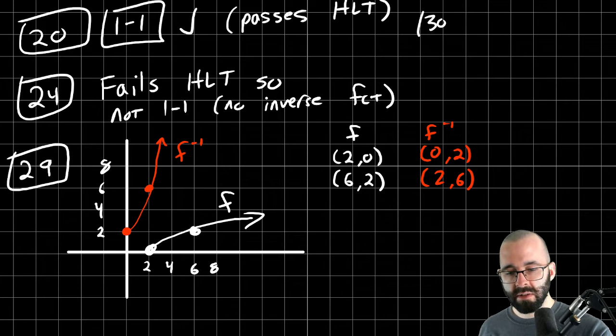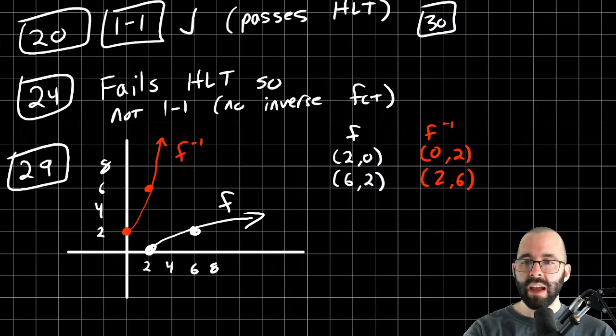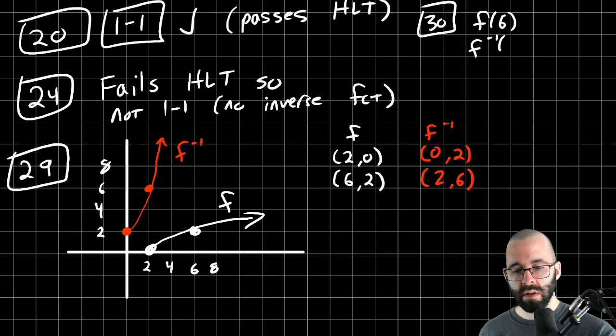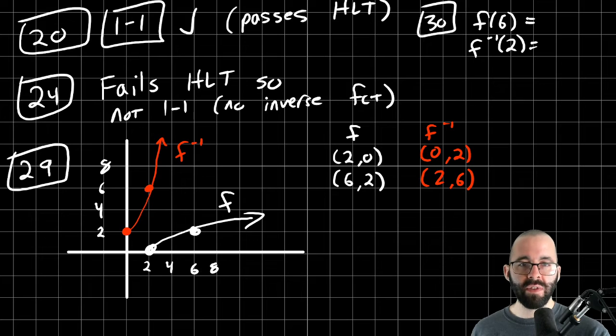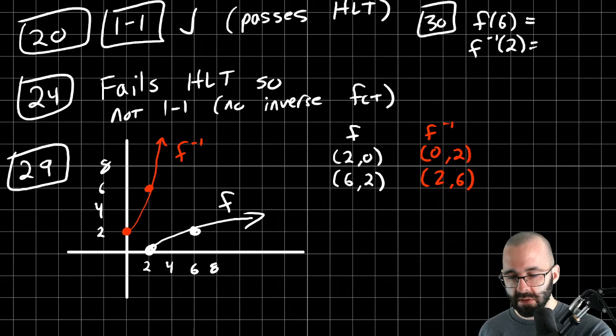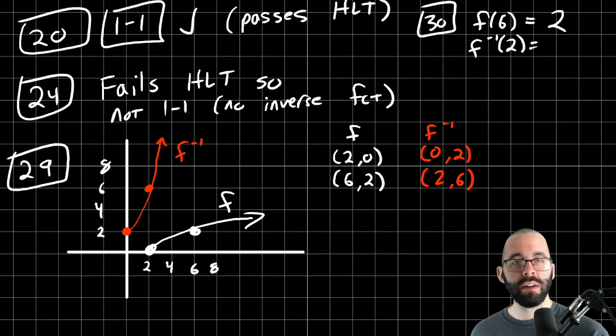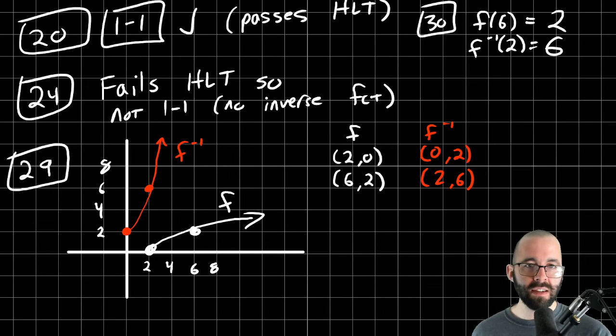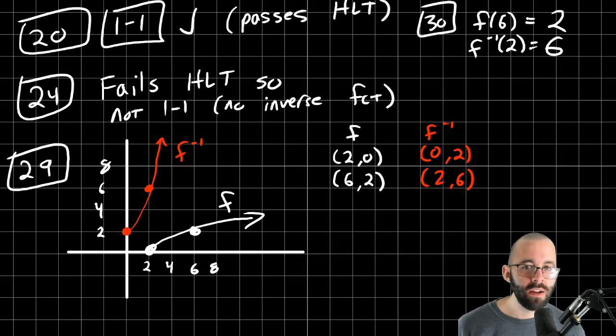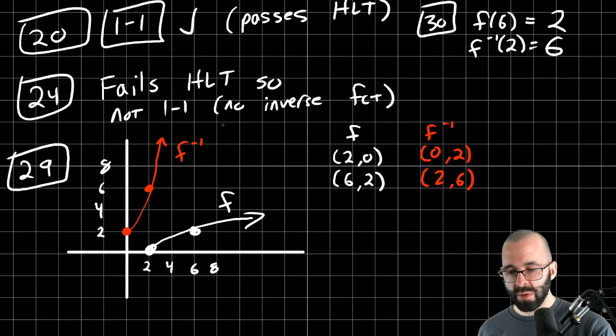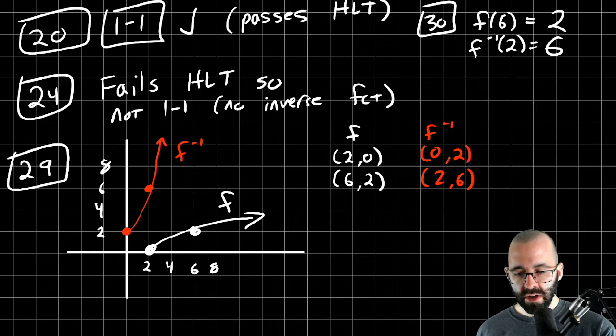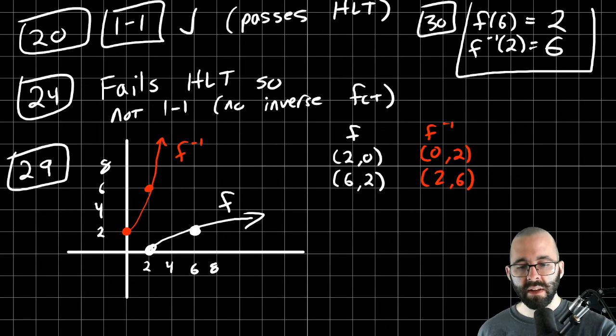Let's do number 30 while we're here. Very closely related. 30 says, find F of 6 and F inverse of 2. So F of 6 says, when the X value is 6, what is the Y value for F? When the X value is 6, the Y value is 2. So as soon as we write that down, we know the answer to this. F takes 6 to 2, so F inverse has to take 2 back to 6. Inverses undo the other functions. Another way of looking at this would be, we have the graph of F inverse. F inverse of 2 is equal to 6. Or you could look at the graph of F. When the Y value is 2, the X value is 6. A couple of different ways of doing that. Three that I counted.